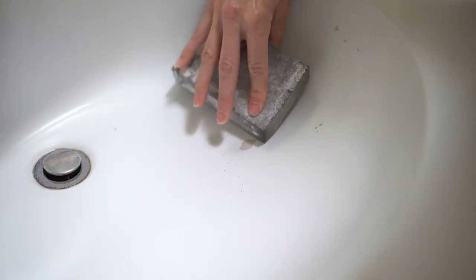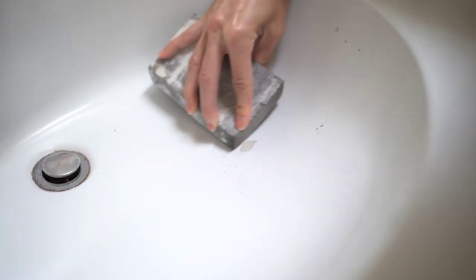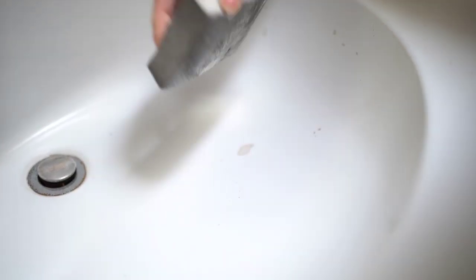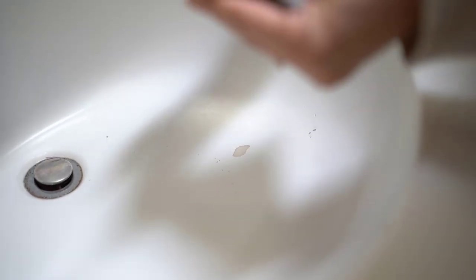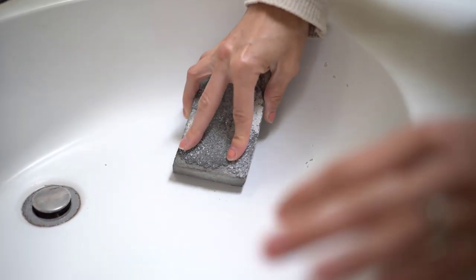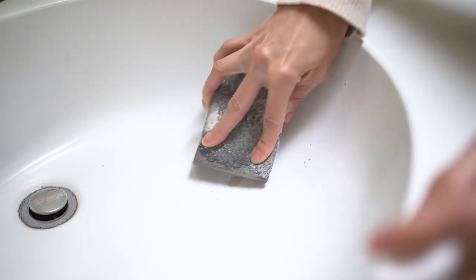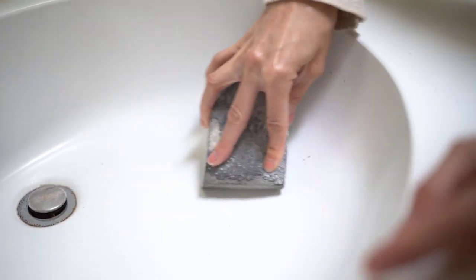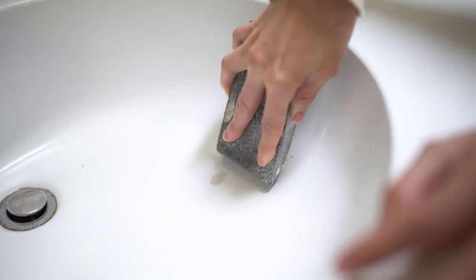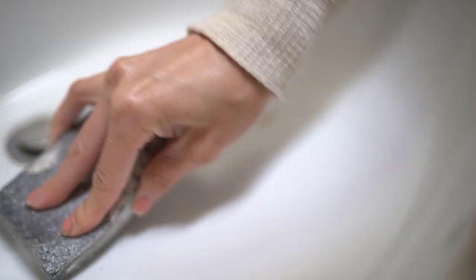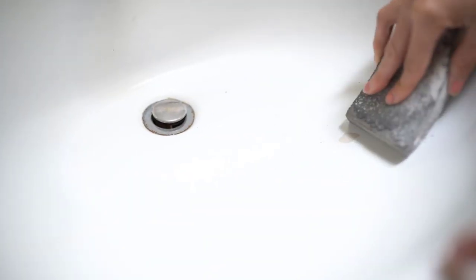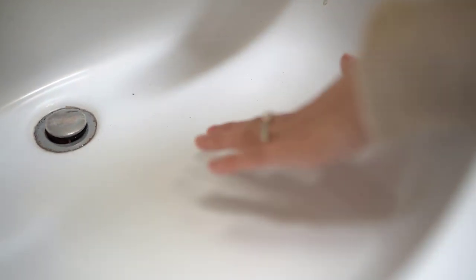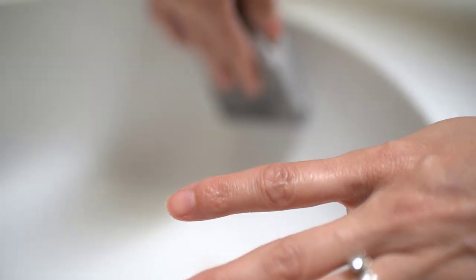I'm just going to take this sanding block, and this is about an 80 grit sanding block that you can get from any hardware store. All of these little pieces or patches that are peeling or anything that I want to fix, I'm just going to kind of scuff it up a little bit. So this is a really important step and one that you don't want to skip.